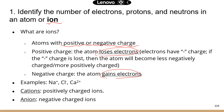Now if you recall, electrons carry negative charge. So if an atom loses electrons, the atom loses the negative charge, so it becomes a positive ion. If an atom gains electrons — electrons again are negative — so this atom gains negative charge, so it's going to become a negative ion.